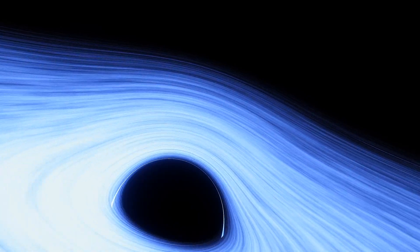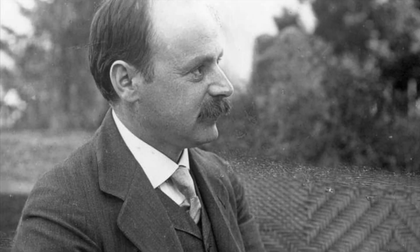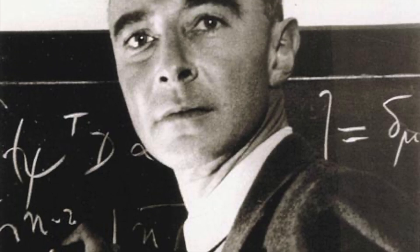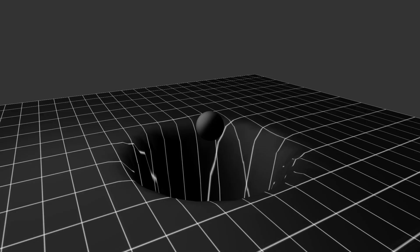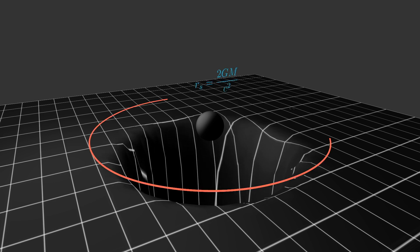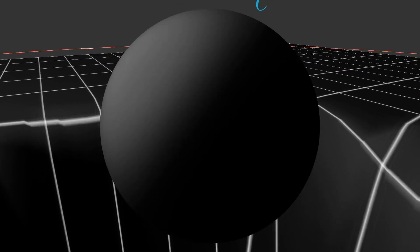At the time, black holes had not yet been fully understood, and Schwarzschild himself considered his solution to be a mathematical anomaly. It wasn't until the mid-20th century, with the work of Oppenheimer, Penrose, and Wheeler, that we came to realize that the Schwarzschild radius defines the event horizon, and that r equal to zero marks the singularity of a black hole.